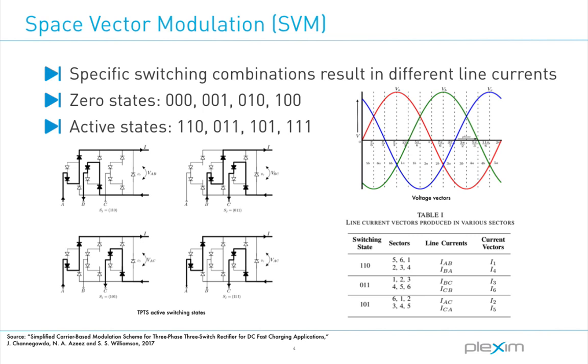The principle of SVM is based on modulating between the different switching combinations for specific time intervals in order to achieve desired line current vectors. The various modes of operation of the converter can be classified into two groups: the zero states, where either only one or none of the switches are on,